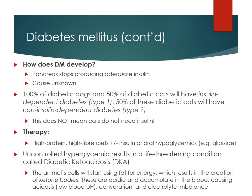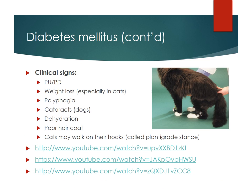Uncontrolled hyperglycemia results in a life-threatening condition called diabetic ketoacidosis (DKA). It's very important to recognize this, as it's very common to see uncontrolled diabetic cats come into the clinic already in DKA. The animal's cells start using fat for energy, which creates ketone bodies — these are acidic and accumulate in the blood causing acidosis, a low pH. Dehydration and electrolyte imbalance also occur in DKA, making it very dangerous and life-threatening.